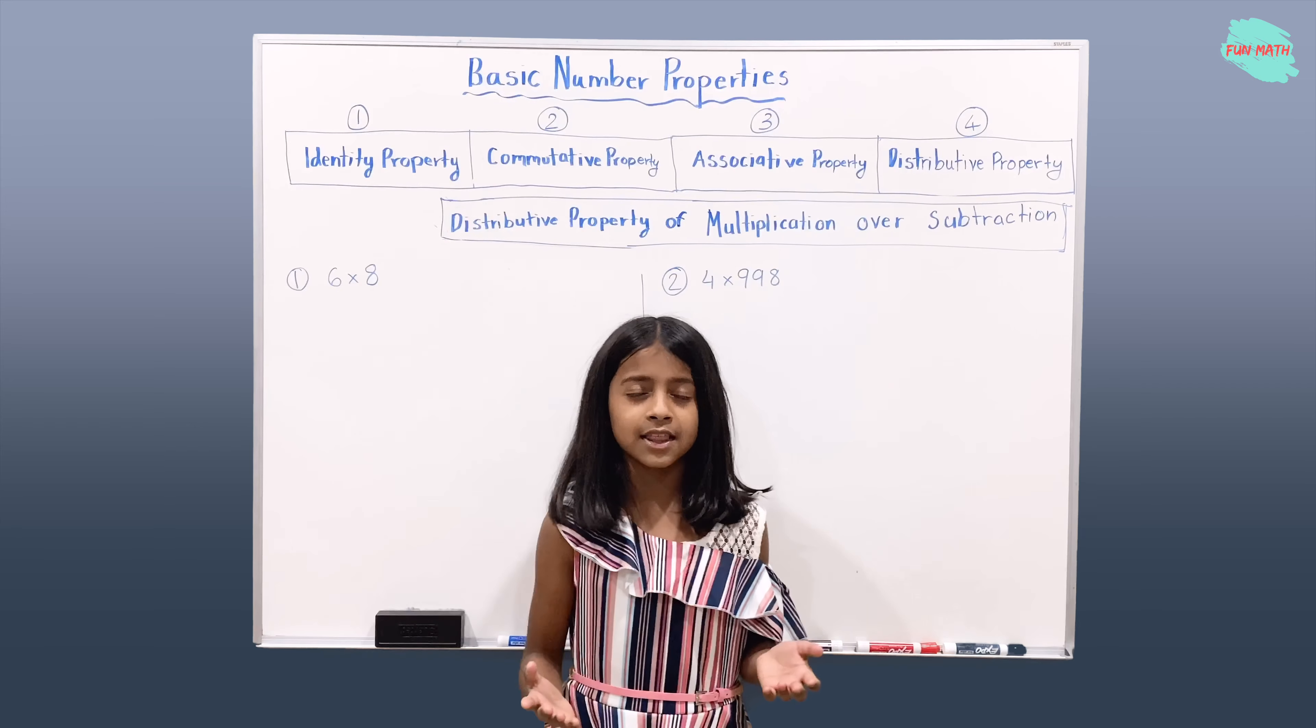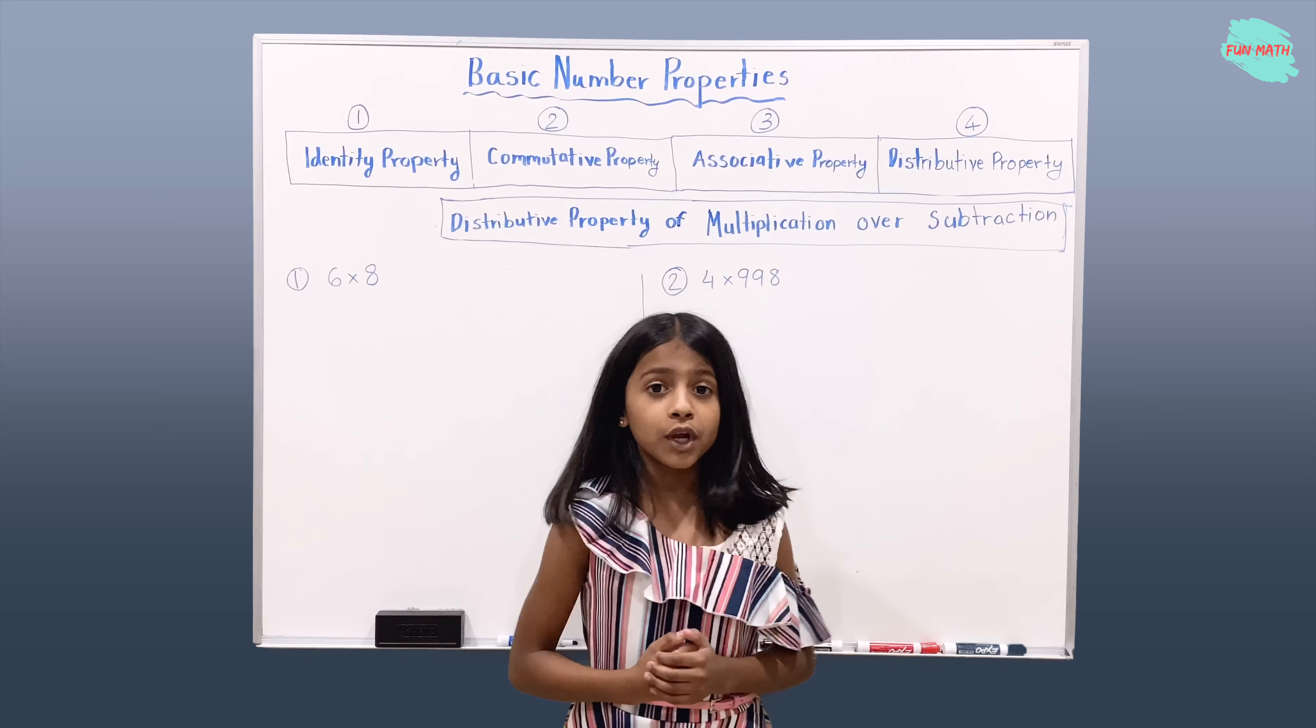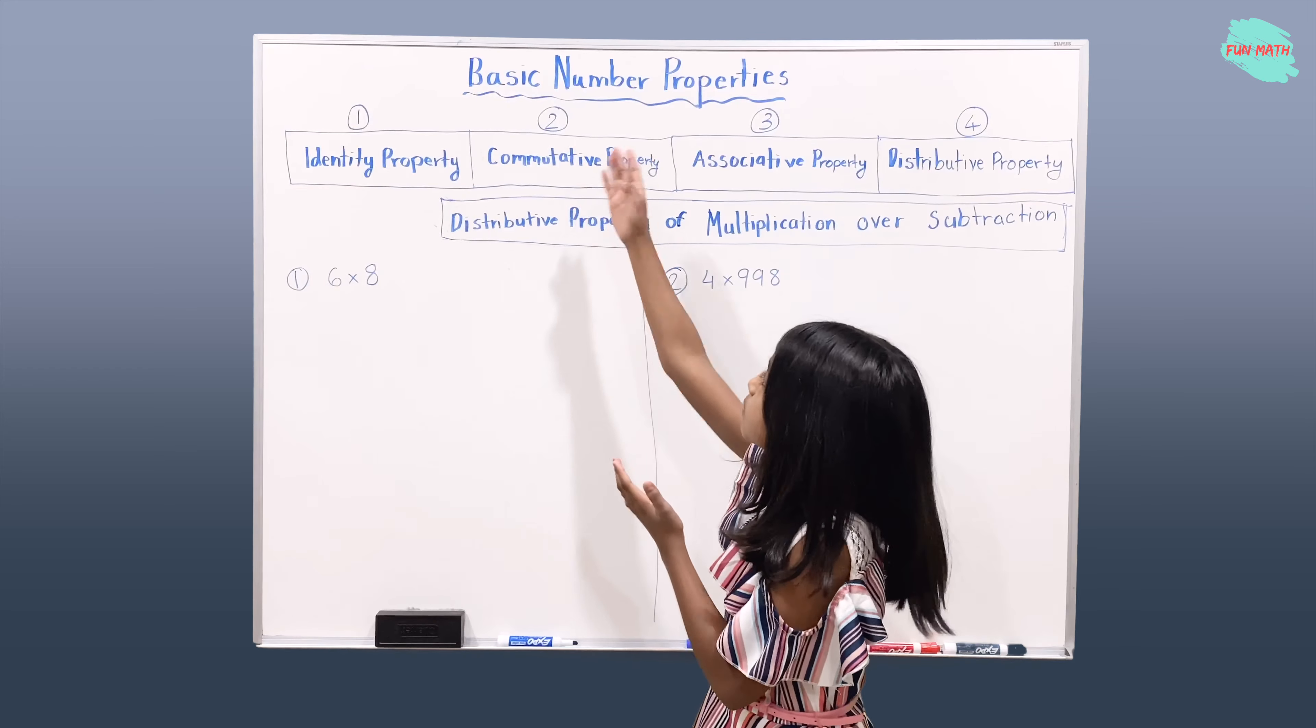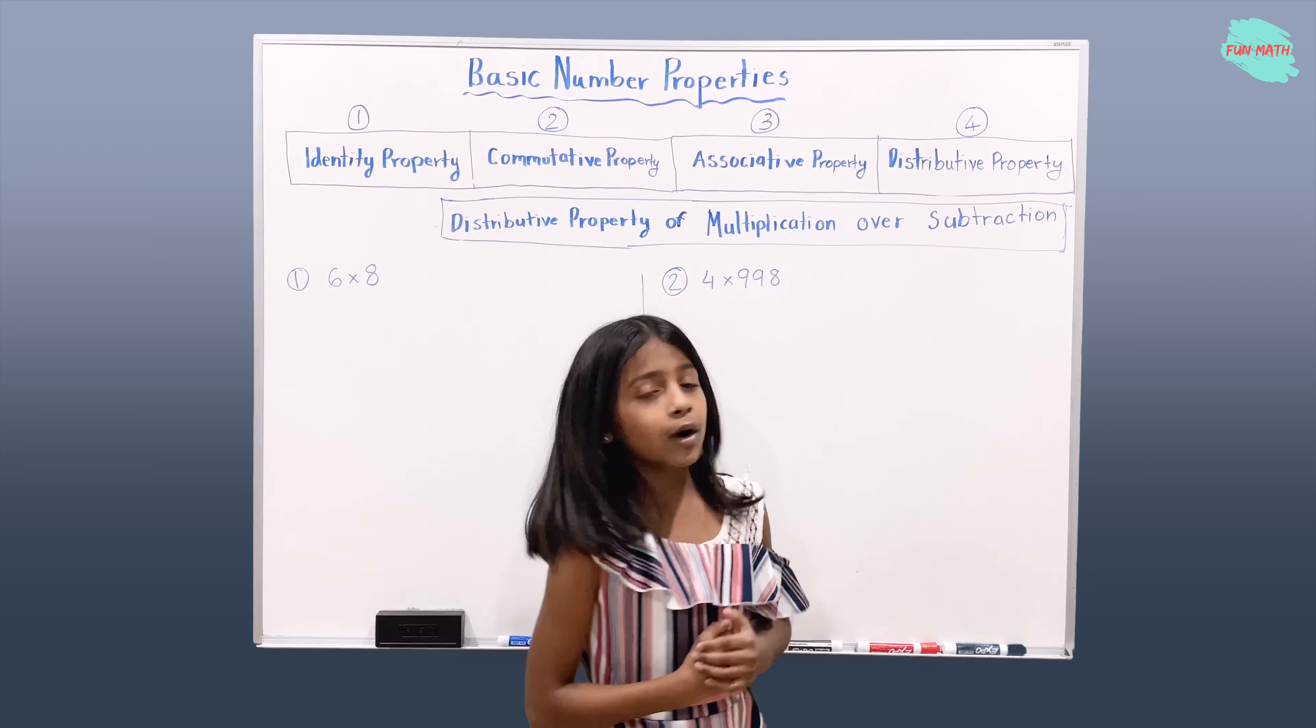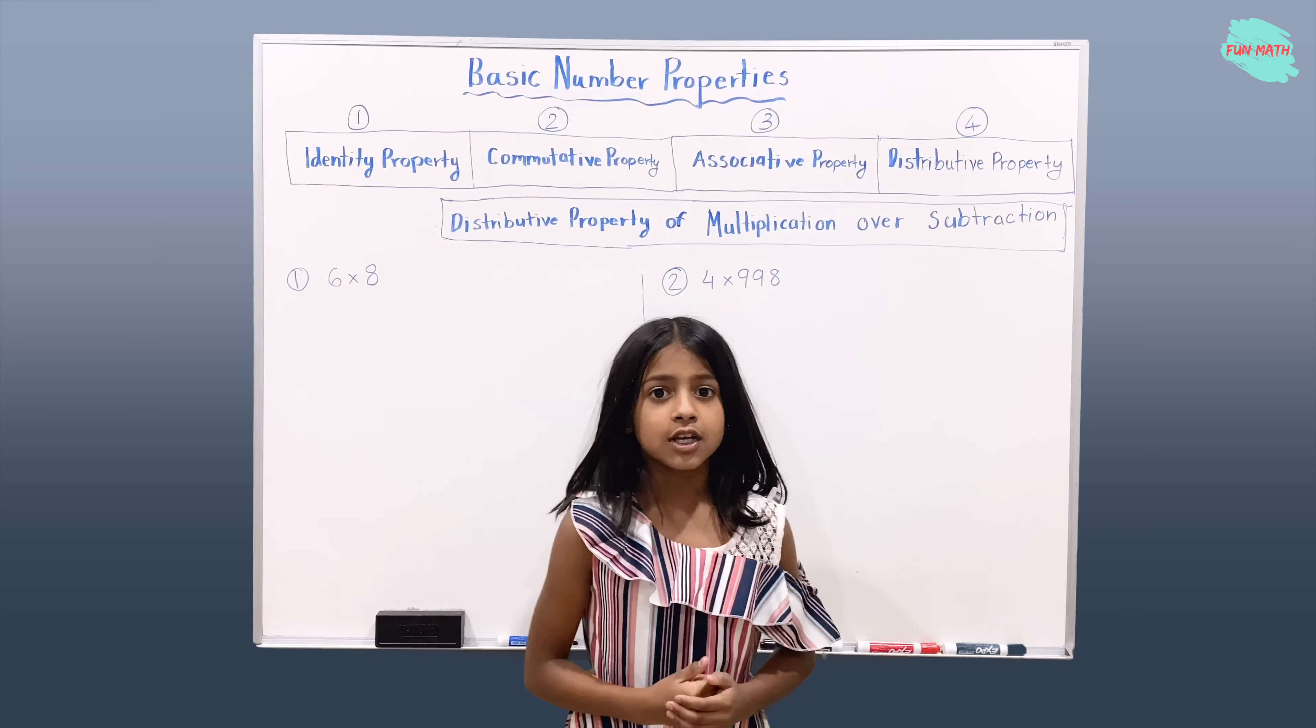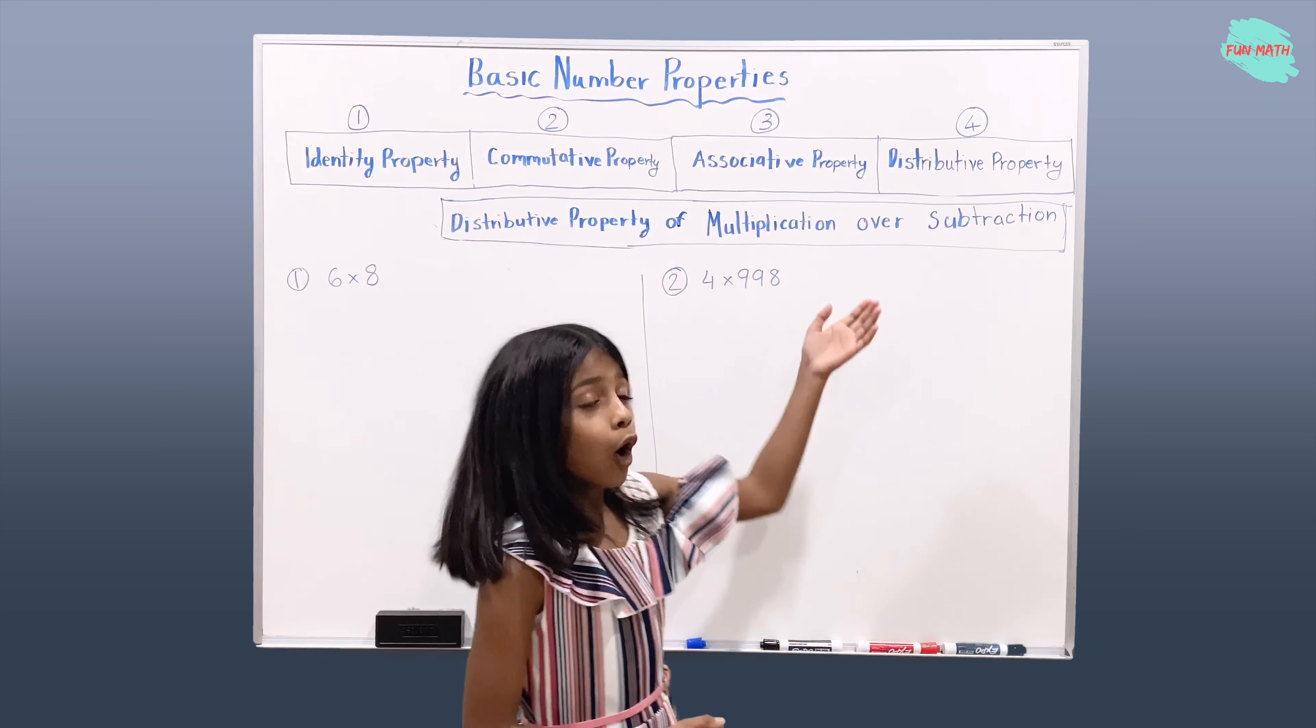Hi, welcome to Fun Math. Today we're going to be talking about basic number properties. We already learned about the identity property, commutative property, associative property, and the distributive property of multiplication over addition. Today we're going to be talking about the distributive property of multiplication over subtraction.